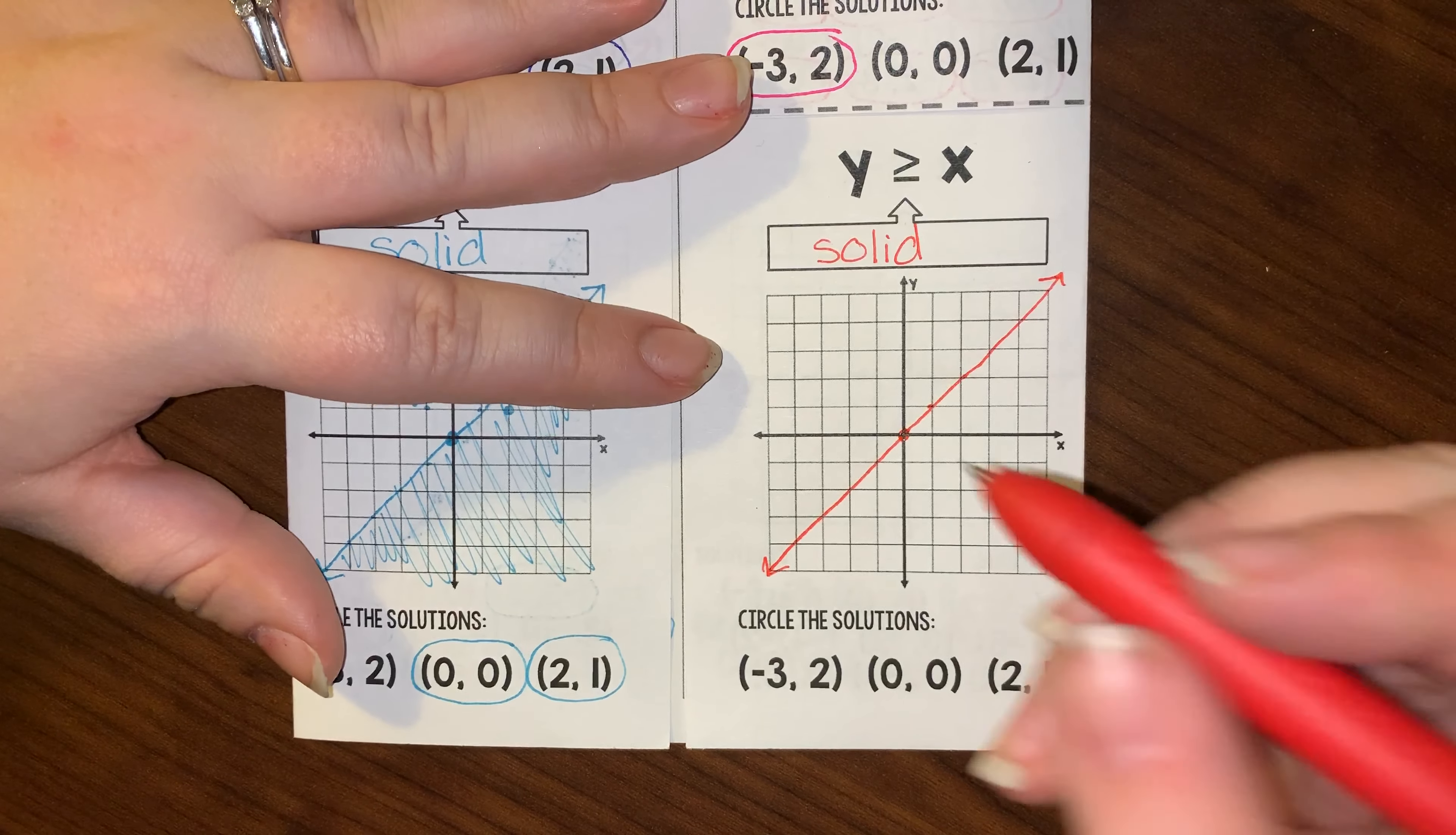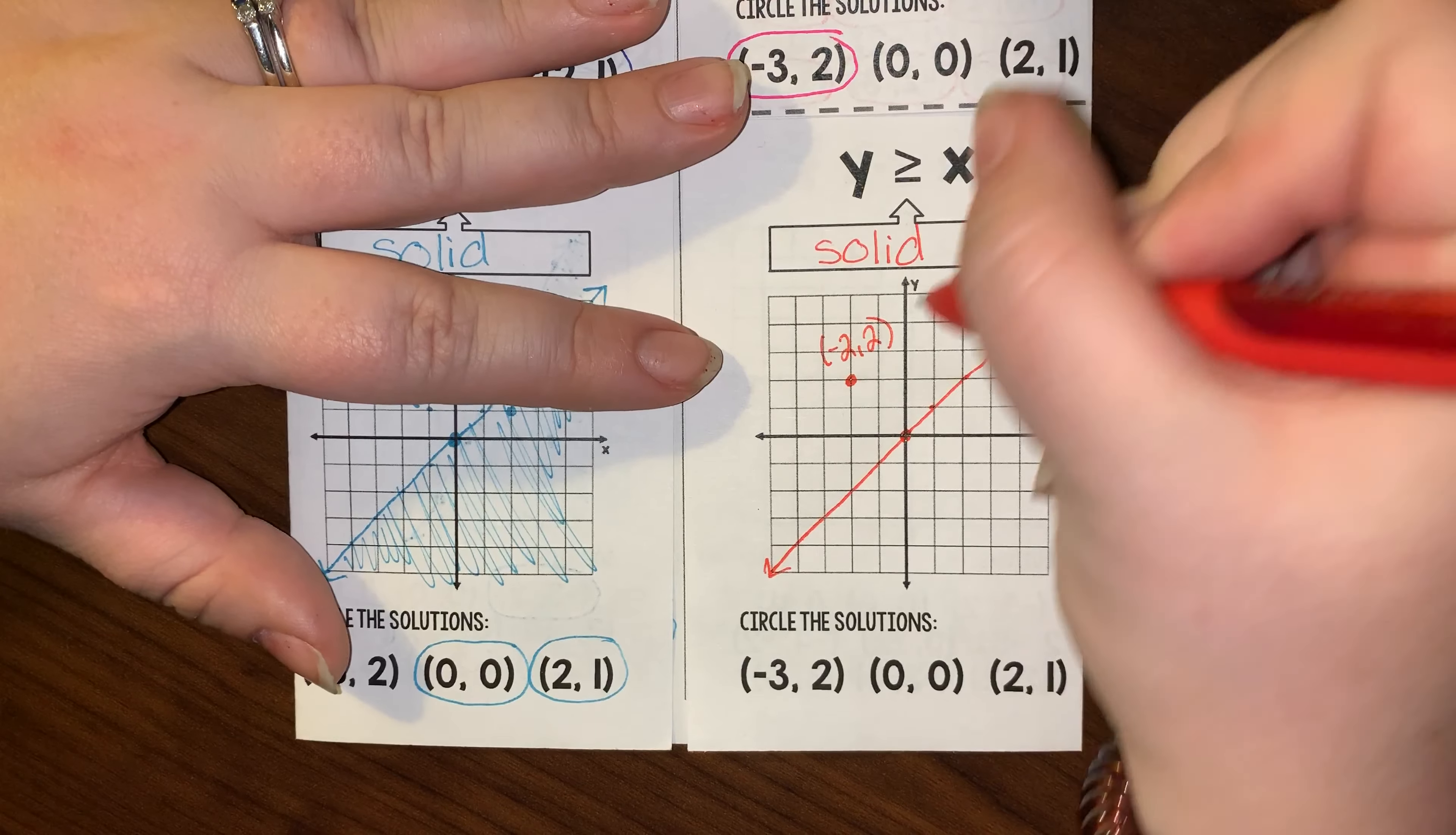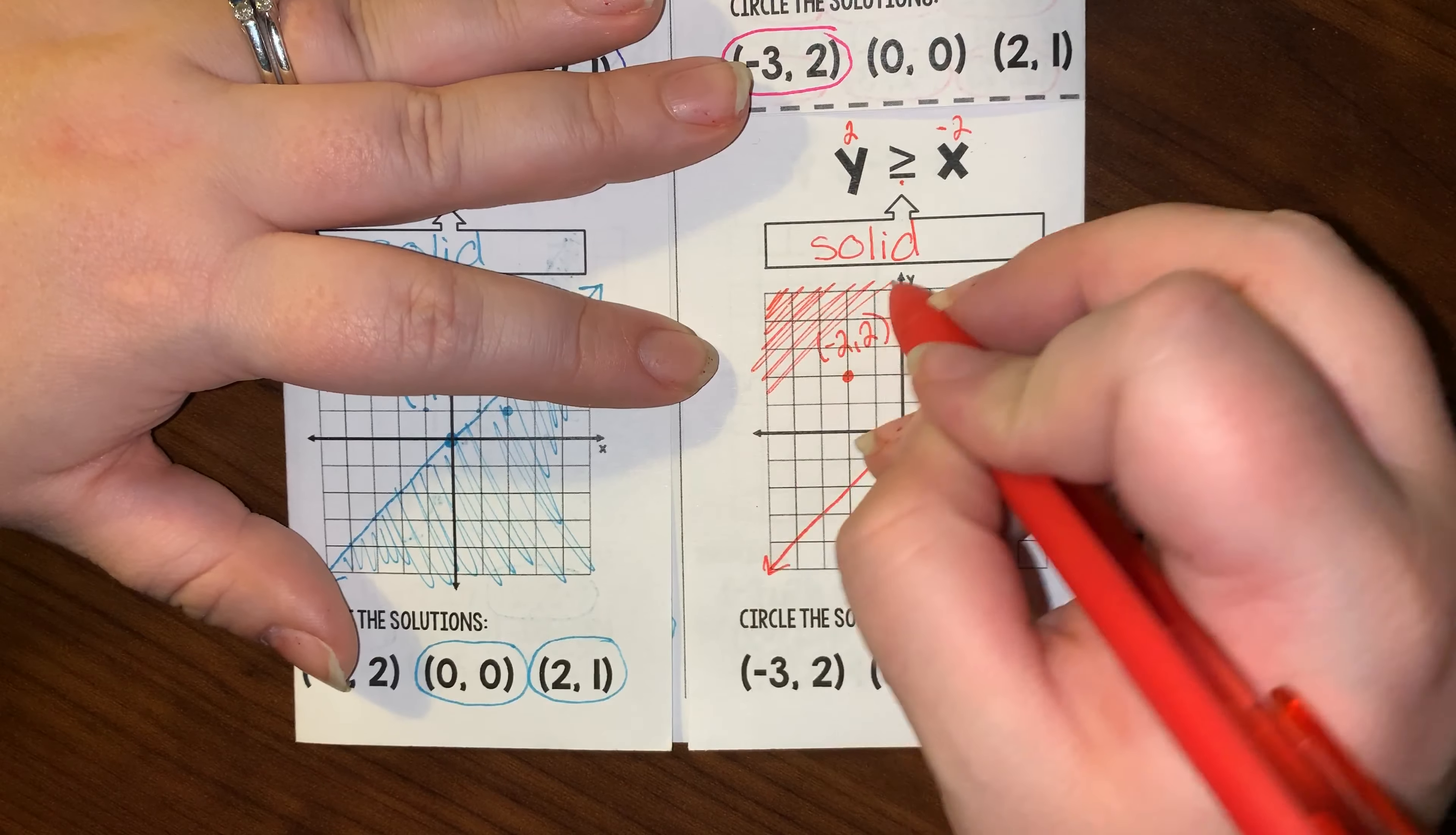Now I need to pick a coordinate and see if it makes the inequality true. Let's say this one at negative 2 comma 2, this is a positive 2 y value and a negative 2 x value. Since 2 is greater than or equal to negative 2, this section will be shaded.